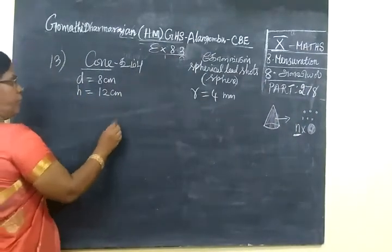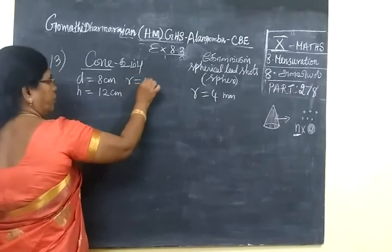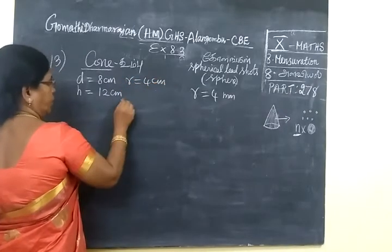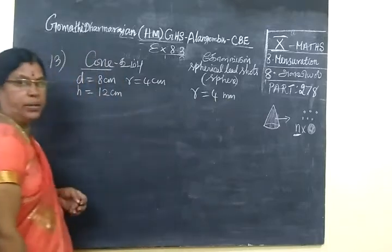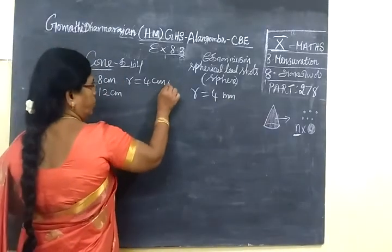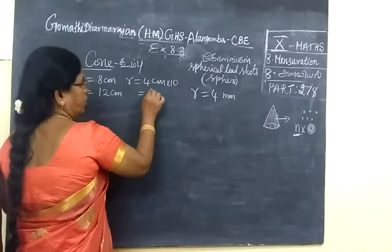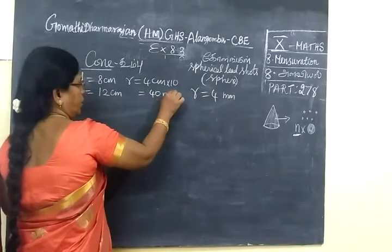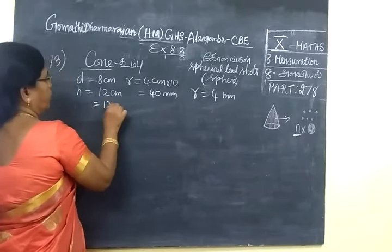The dimensions are: radius is 4 cm, which is 40 mm, and the height is 12 cm, which is 120 mm.